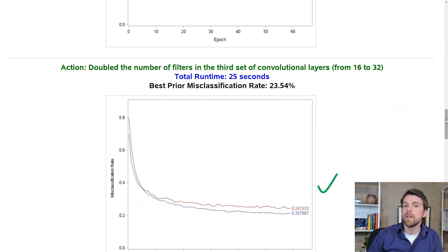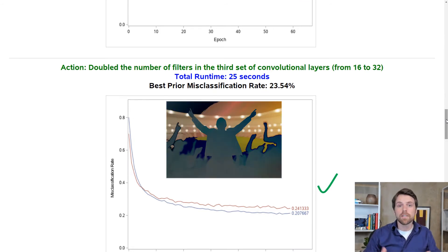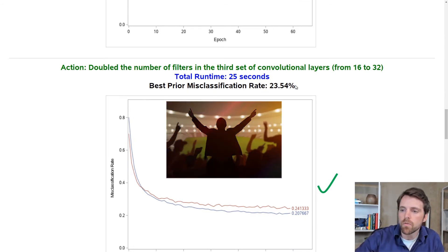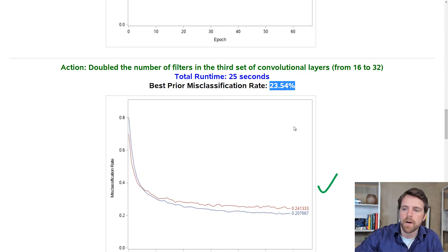Next I tried doubling the number of filters on the third convolutional layer. This worked! The previous best-performing model was 23.54% misclassification rate on the training. And this new model now has a misclassification rate of 20.77%. And the cost in computation was only one second.